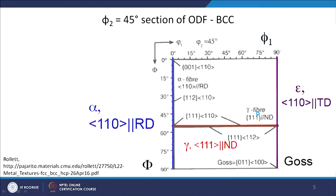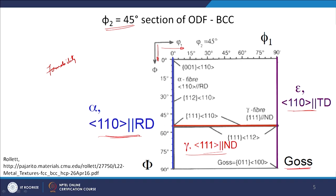One of the most important sections when talking about BCC material in terms of formability of steel is the phi2 = 45 degree section of the ODF. In this section, phi1 runs 0 to 90 and Phi runs 0 to 90, and you can see both the alpha fibre, the gamma fibre, an epsilon fibre, and the Gauss texture — which we have already seen in terms of pole figure and in terms of HKL UVW. For formability, the gamma fibre is very important in case of steels.